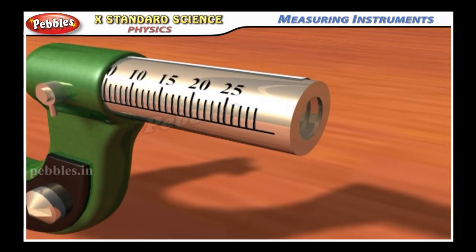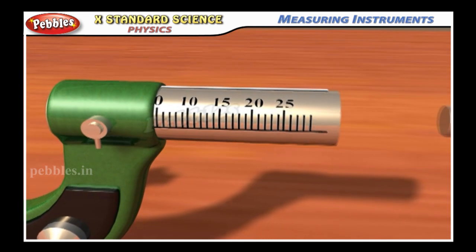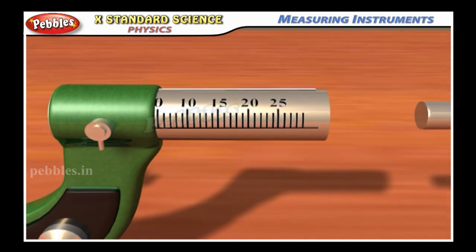On the cylinder parallel to the axis of the screw, a scale is graduated in millimeters called pit scale.